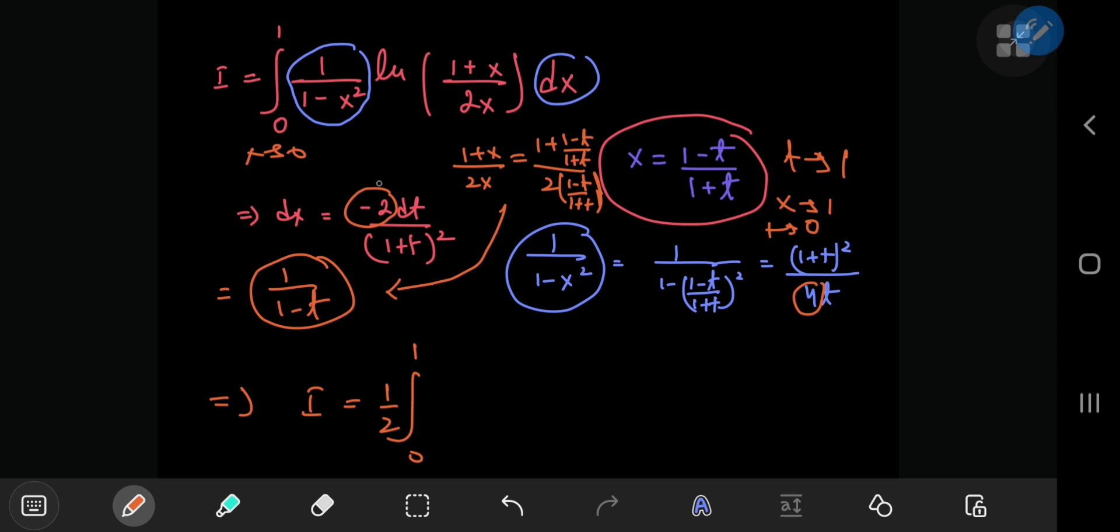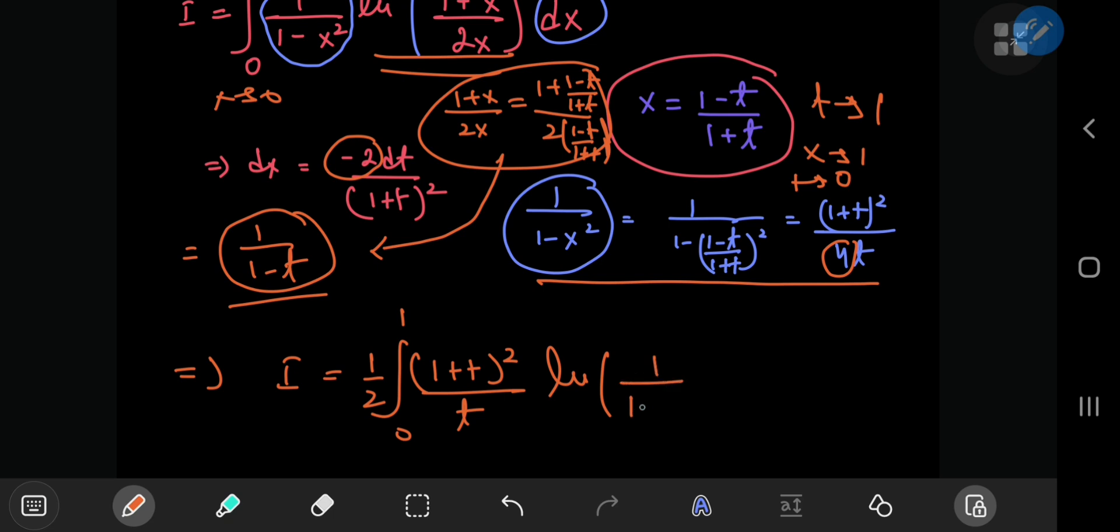So you have, oh yeah, first up we had this term, 1 plus t squared divided by t. Then you had this natural logarithm term. Now the natural logarithm term becomes the natural log of 1 by 1 minus t, and the differential element was dt by 1 plus t squared, because we dealt with the constants earlier.